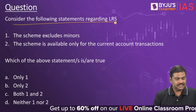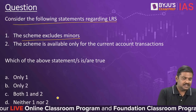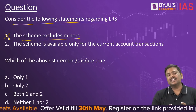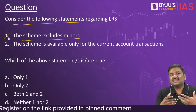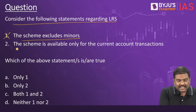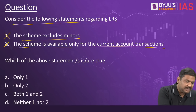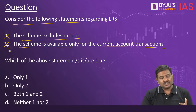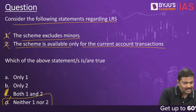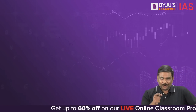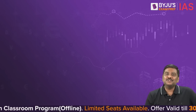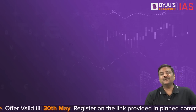Consider the following statements regarding LRS. Statement one: the scheme excludes minors — this is wrong. LRS even covers minors, but with the condition that the legal guardian or legal custodian must give their signature. Statement two: the scheme is available only for current account transactions — this is also wrong. It is available for both current account and capital account transactions. So both statements are wrong, and the correct option is D: neither one nor two. If you like these initiatives, please hit the like button, provide your comments below, and subscribe to Baiju's Exam Prep IAS channel.